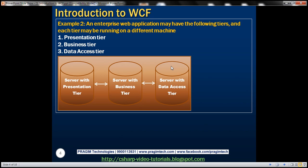You may wonder why somebody would break down an application into different tiers and deploy those tiers on different machines. That's basically to improve scalability. Scalability means that as the number of users increases, you don't want the performance of the application to degrade. If you have a few visitors, you can deploy all tiers on a single machine. But if you're expecting hundreds of thousands of users, you need more hardware and processing capability. So you deploy your tiers on different machines, each with their own processors and memory, allowing them to handle more requests without degrading performance.